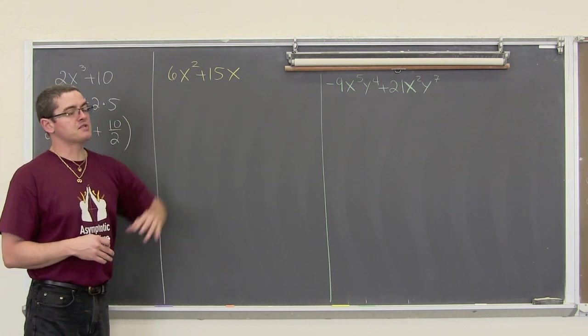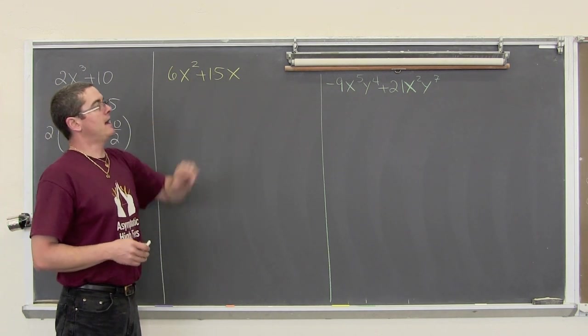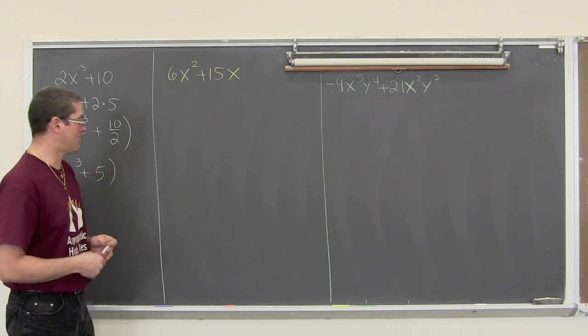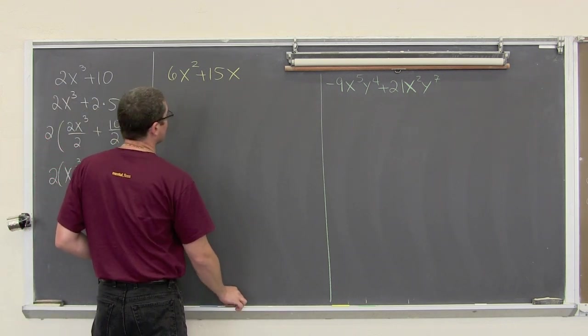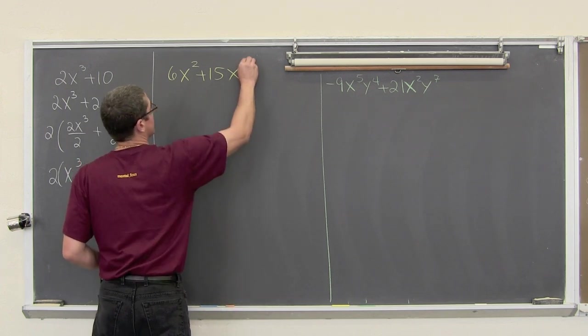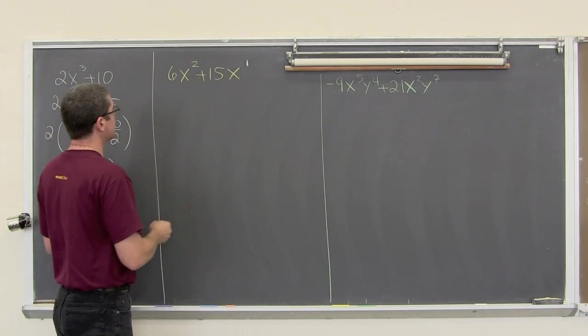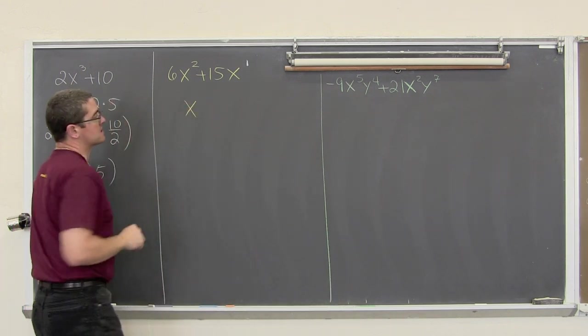Here we have 6x squared plus 15x. Now, both of these terms have a common variable. So, we are going to pull an x out, and we are going to look through this and find where is the lowest exponent. Well, that lowest exponent on the variables is the x. So, we are going to be able to take out an x.